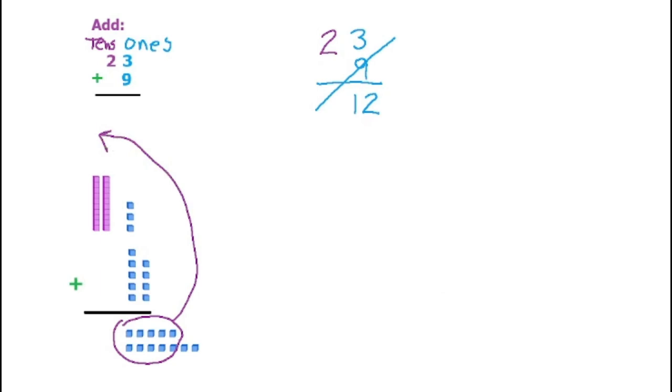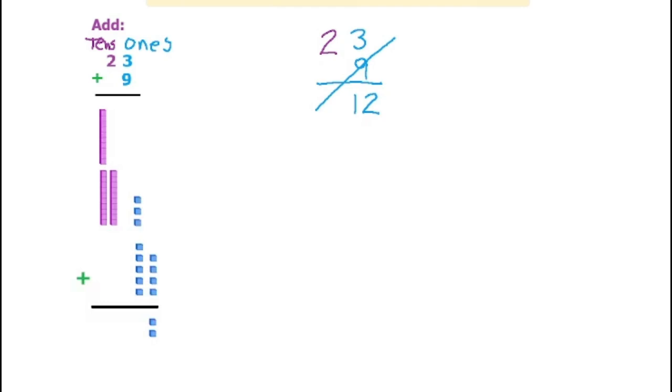So how would that look? It would look like this. We would now have 3 in the tens, so 30. And then we would only have 2 left here.